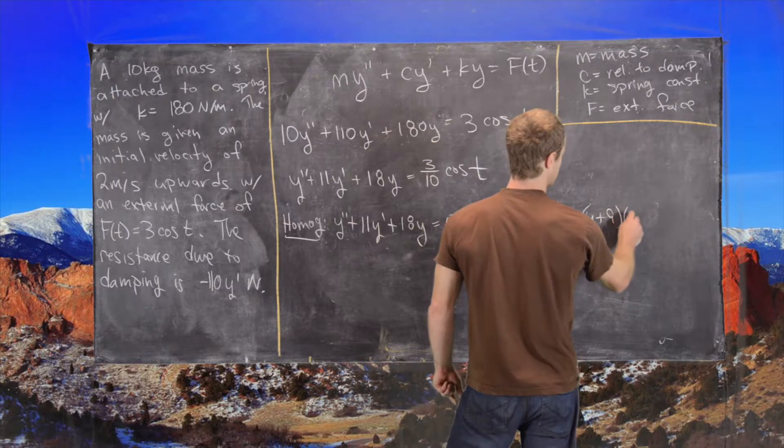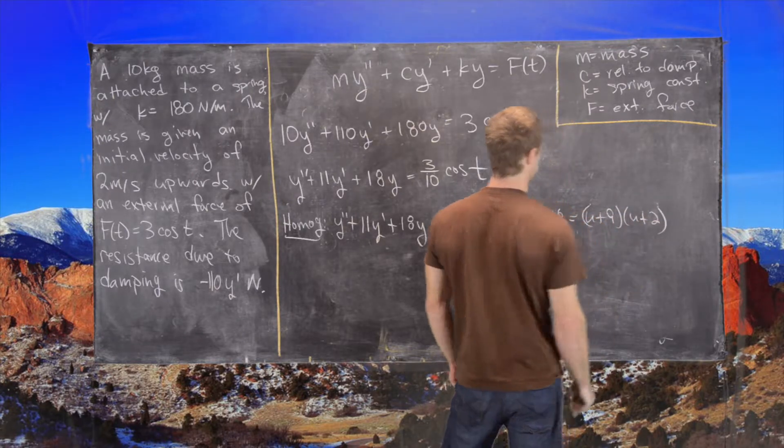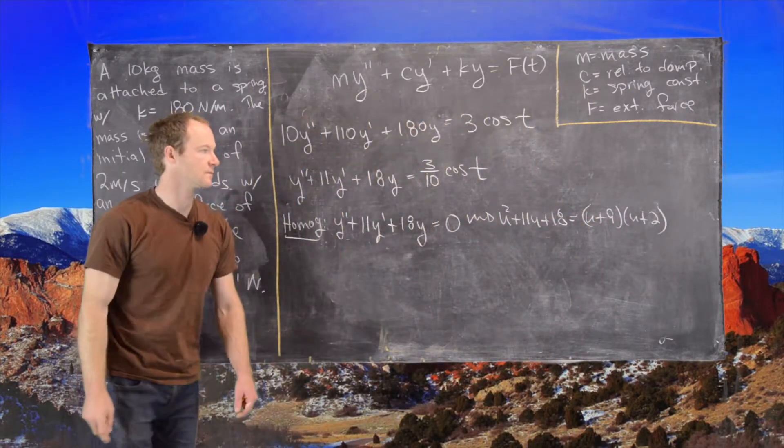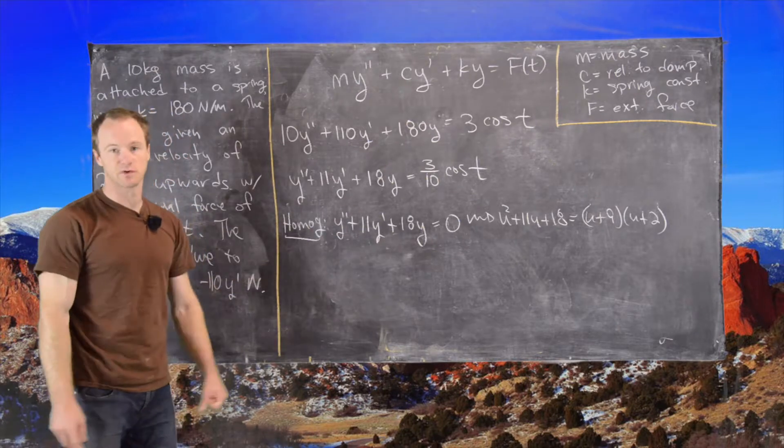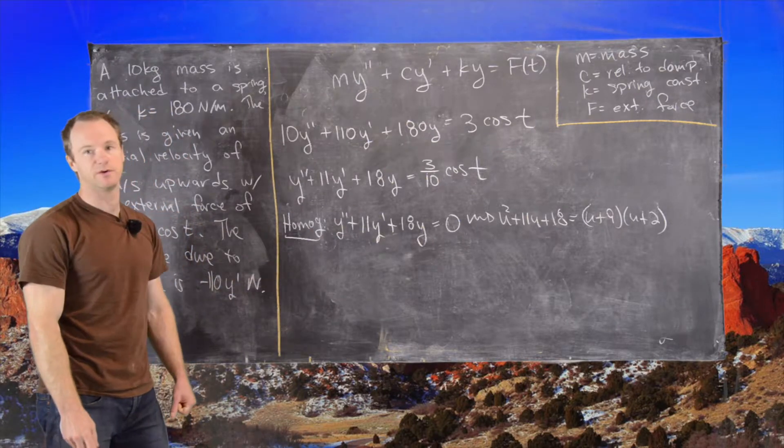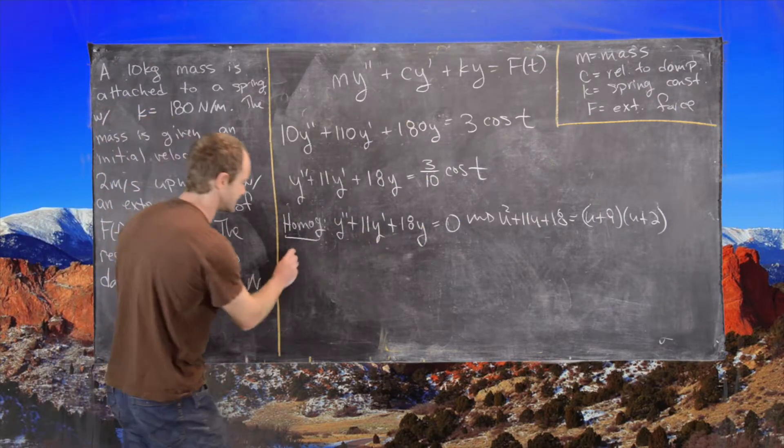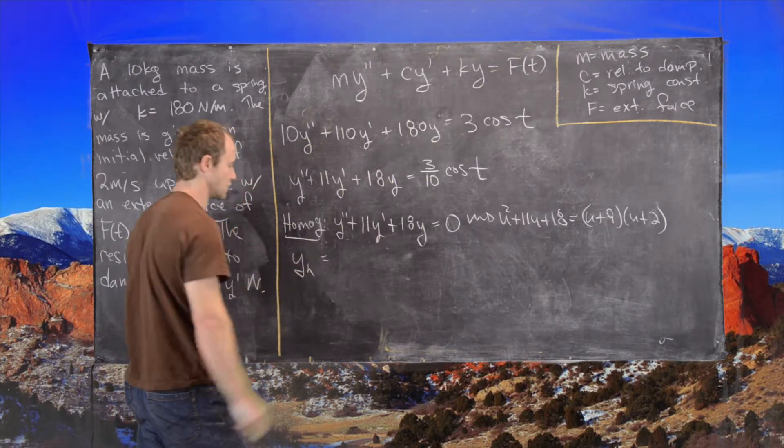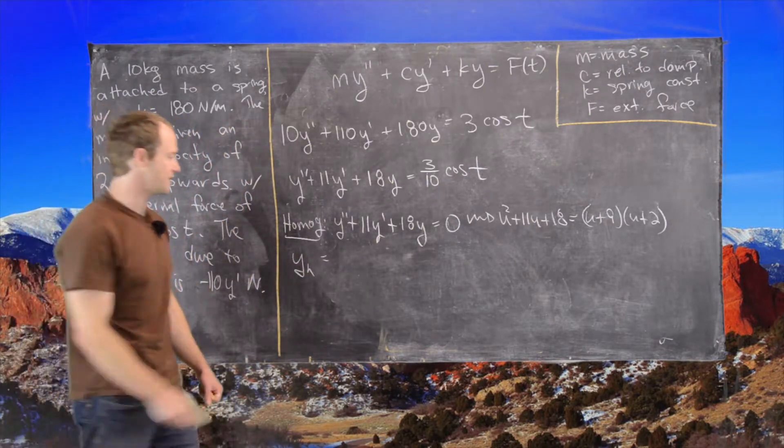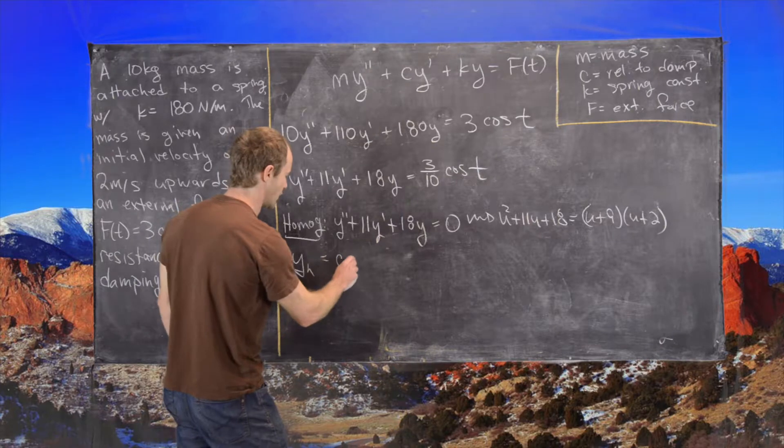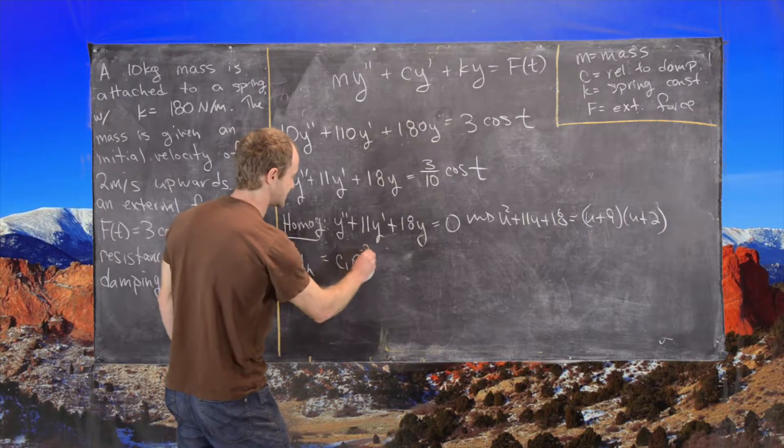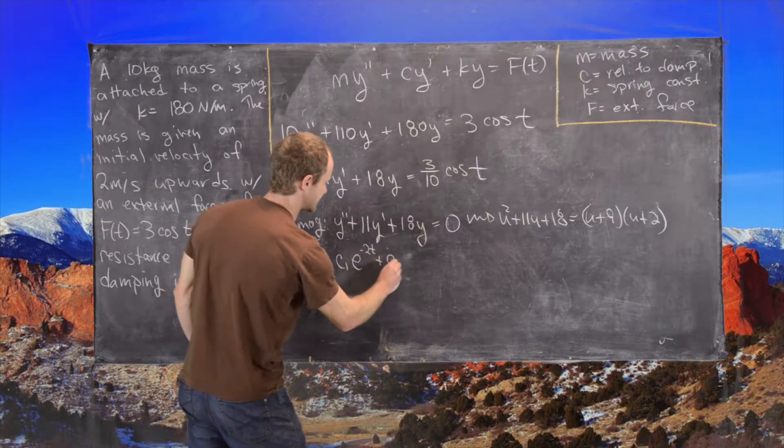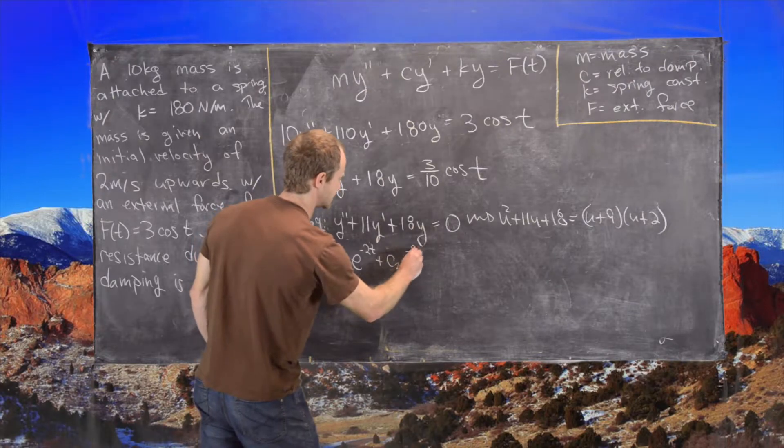u plus 9, u plus 2. So we see that that has roots u equals negative 9 and u equals negative 2, which tells us that we have a solution to the corresponding homogeneous differential equation given by c1 e to the minus 2t plus c2 e to the minus 9t.